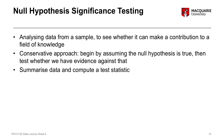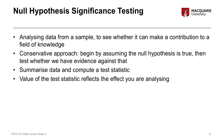We do this by summarizing the collected data and computing what's called a test statistic — a number derived from the data. We look at the value of that number to see how likely it is that we obtained this particular test statistic if the null hypothesis is true. The value of the test statistic reflects the effect we're analyzing: if we're looking at a difference between two groups, it represents how big that difference is; if we're looking at a relationship between two variables, it represents the strength of that relationship.